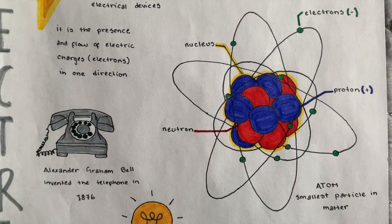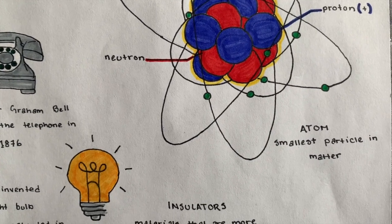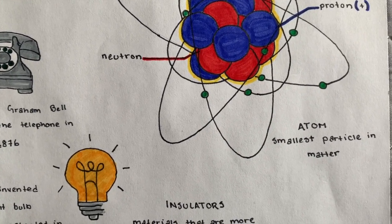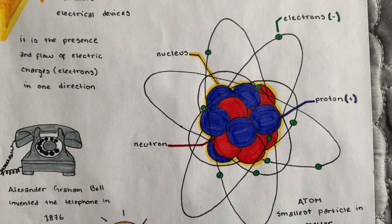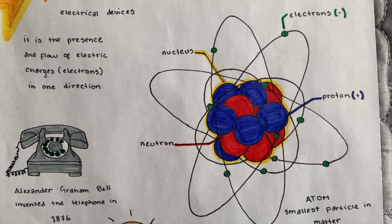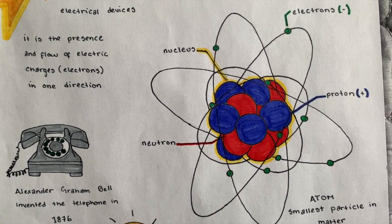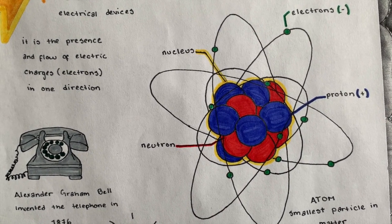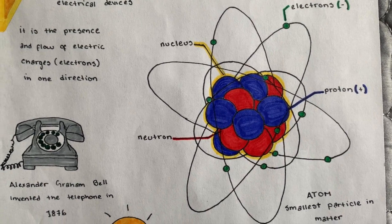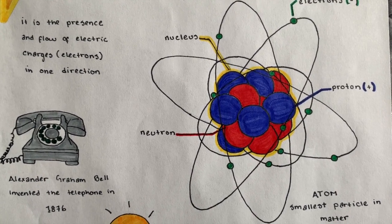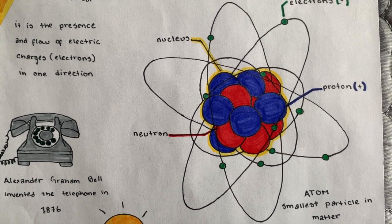So here we have an atom. An atom is the smallest particle in matter and is made up of several parts. You have electrons which have a negative charge that flow around the nucleus. The nucleus contains protons and neutrons. Protons have a positive charge while neutrons have no charge, or are neutral.